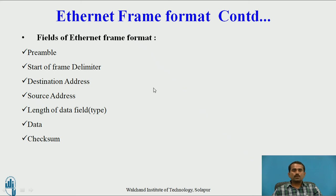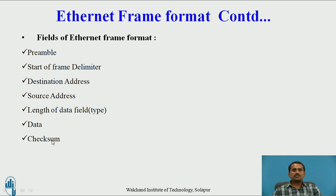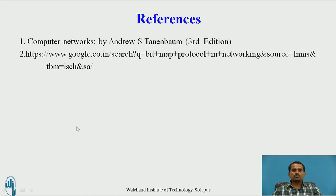These are the different fields in the frame: the preamble field, the start of frame delimiter used for fixing the starting end of the frame. The destination address contains the remote or receiver information. The source address is the current user or sender information. The length of data depends upon the user — this is the actual data kept in the frame for transfer. The type field specifies what type of data is being transmitted. The CRC checksum field is used during transmission — if the data is corrupted, lost, or tampered with, the checksum is used to detect that. These are the references used for this video.